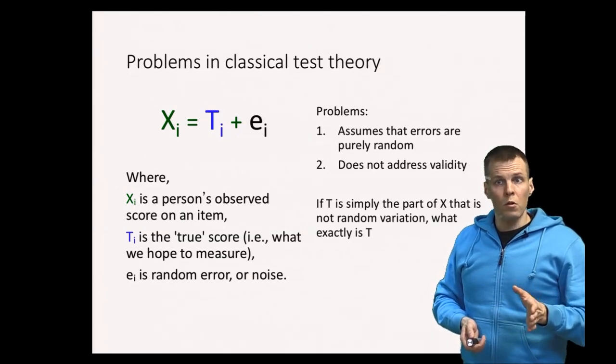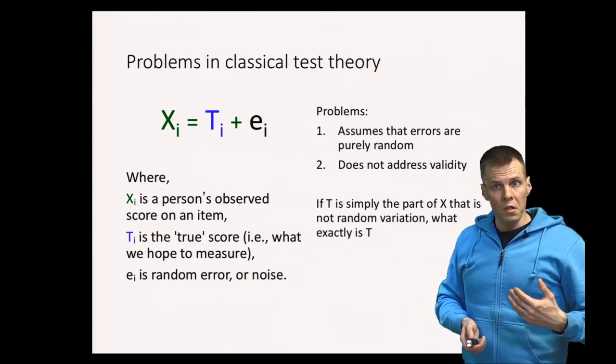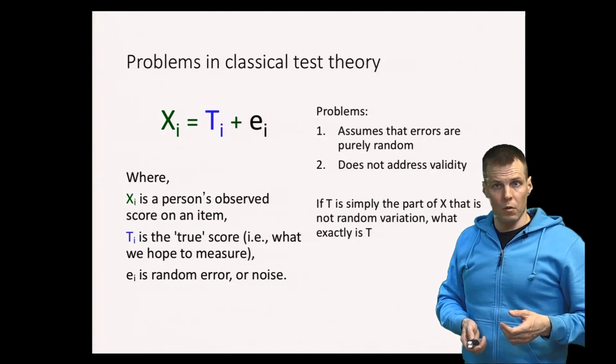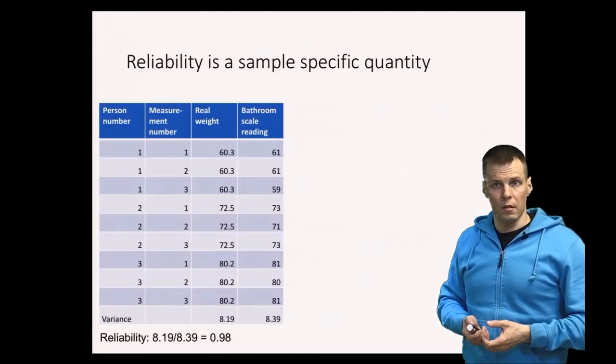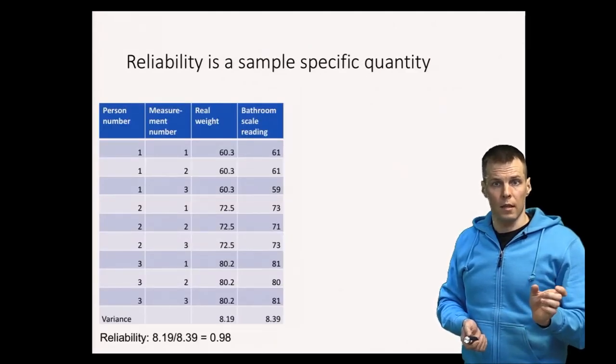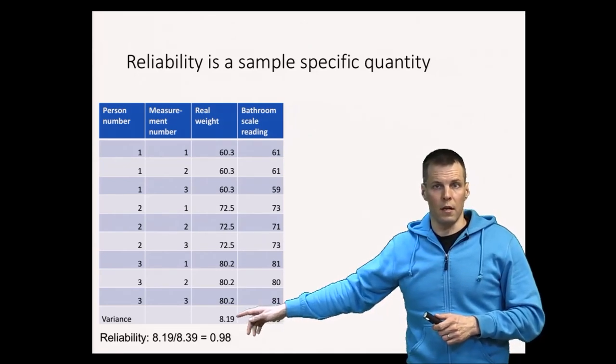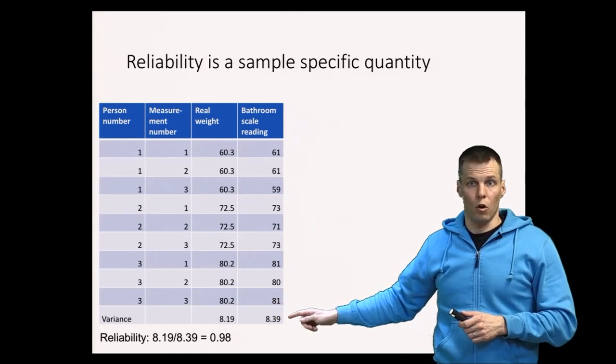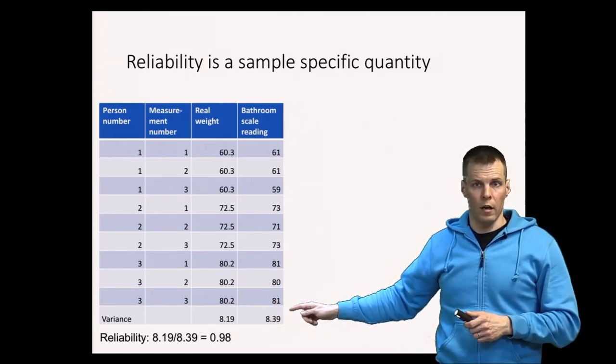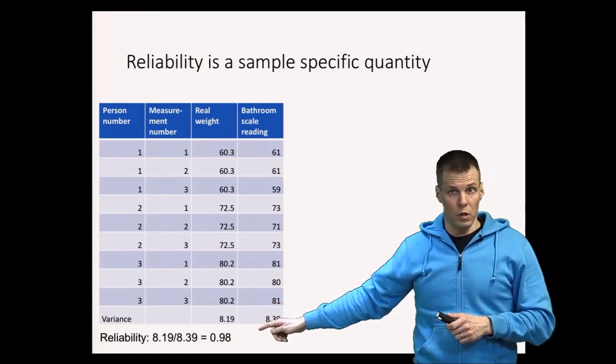There is also one interesting feature about reliability. Let's take a look at the bathroom scale. The idea of reliability was that the reliability is the true score variation here, 8.19, divided by the actual observed score variation, 8.39. So this is 98% reliable.